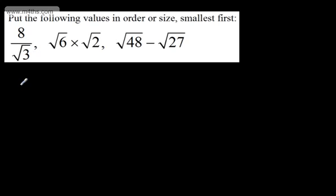So let's start here and rationalize the denominator. Multiplying top and bottom by root 3, we'll have 8 root 3 over root 3 multiplied by root 3. Simplifying, root 3 times root 3 is 3, so we'd have 8 root 3 over 3.